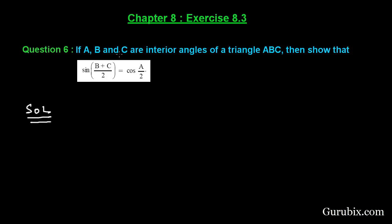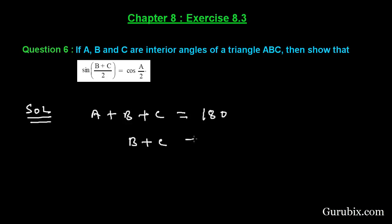We are given that a, b, and c are the interior angles of a triangle, so a + b + c = 180°. If we keep b + c on the left hand side and take a to the right hand side, it becomes b + c = 180° - a.